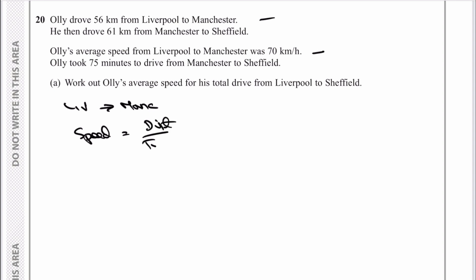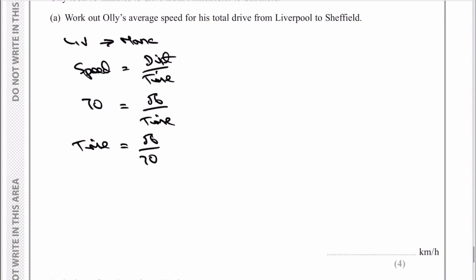Liverpool to Manchester: speed = distance ÷ time. This will allow me to calculate the time. He's got a speed of 70, distance is 56, divided by time. If I make time the subject, it's 56 ÷ 70 = 0.8. Be very careful because that means 0.8 of an hour. In actual minutes, that's 0.8 × 60 = 48 minutes to drive from Liverpool to Manchester.